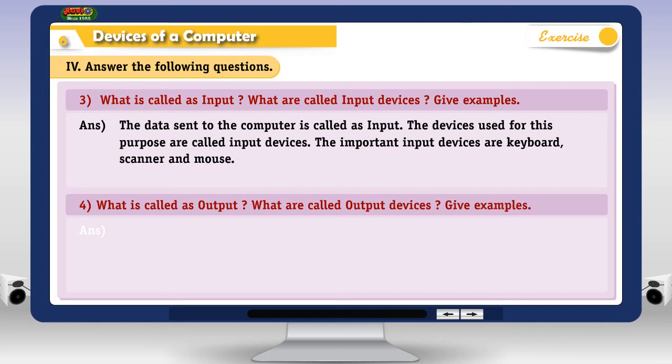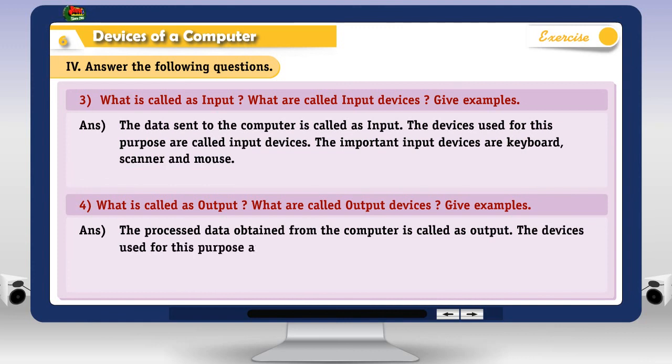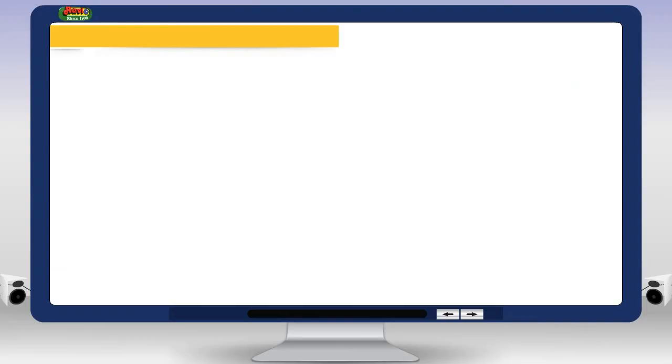4. What is called as Output? What are called Output devices? Give examples. The processed data obtained from the computer is called as output. The devices used for this purpose are called output devices. The important output devices are monitor and printer.